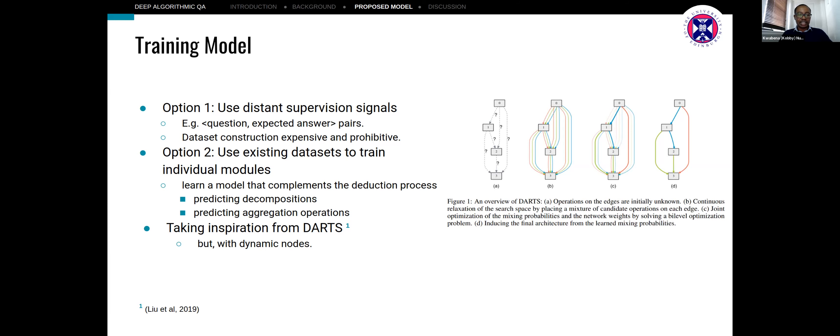For instance, training how we select decomposition operations or aggregation operations differently from how we encode the embeddings of the functional nodes. Here we take inspiration from the DART system, which looks at constructing neural architectures to solve specific problems.